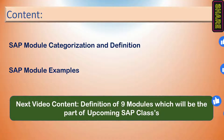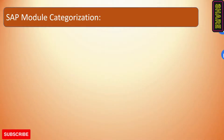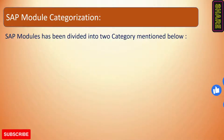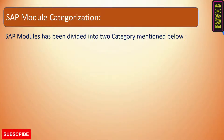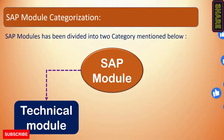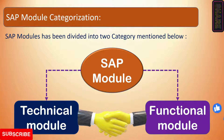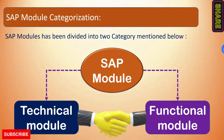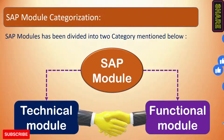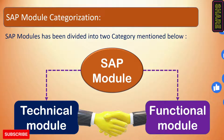Moving further, if we look at the SAP module categorization, SAP modules have been divided into two categories: one is the technical module and another one is the functional module. Both modules are tightly integrated with each other. From the name itself it is clear — technical means the modules that belong to the technical part, and functional means the modules which relate with the functional activities of the business.